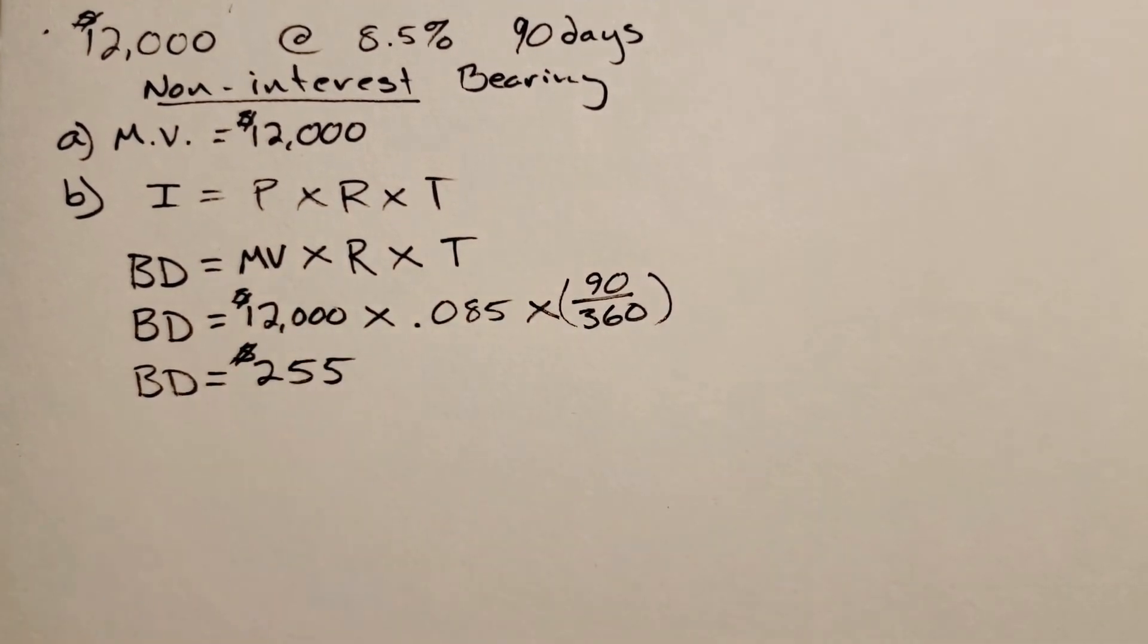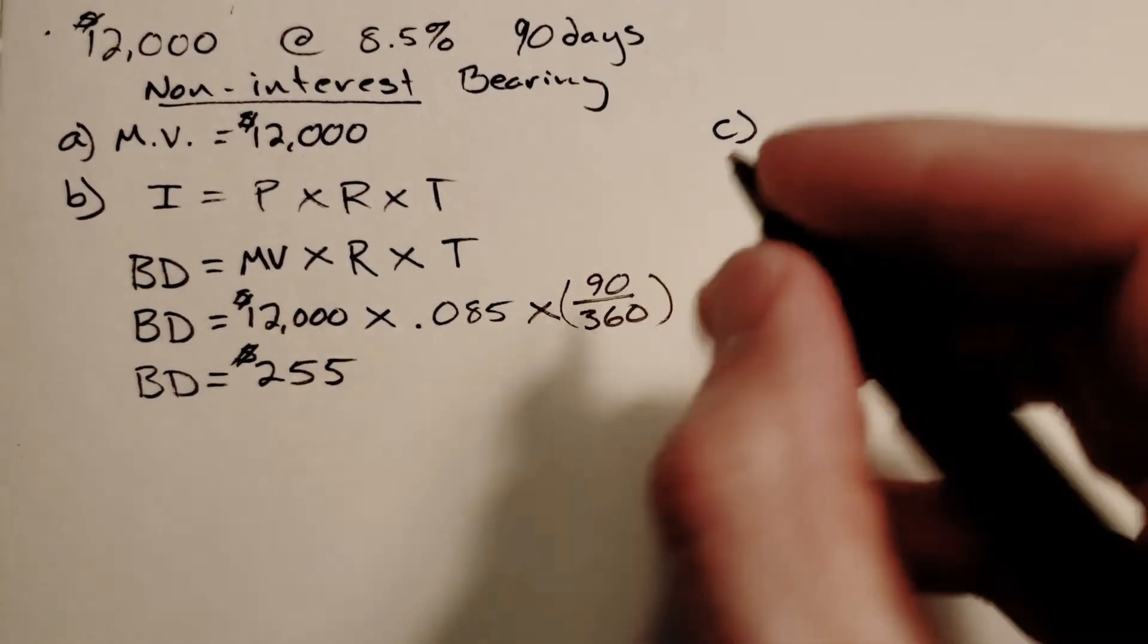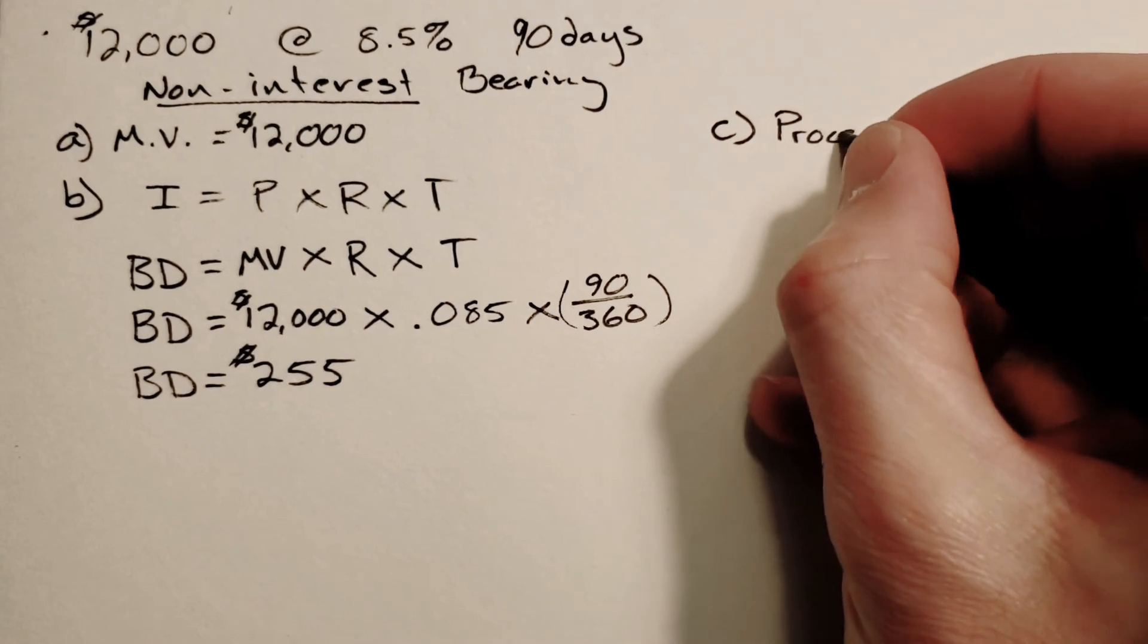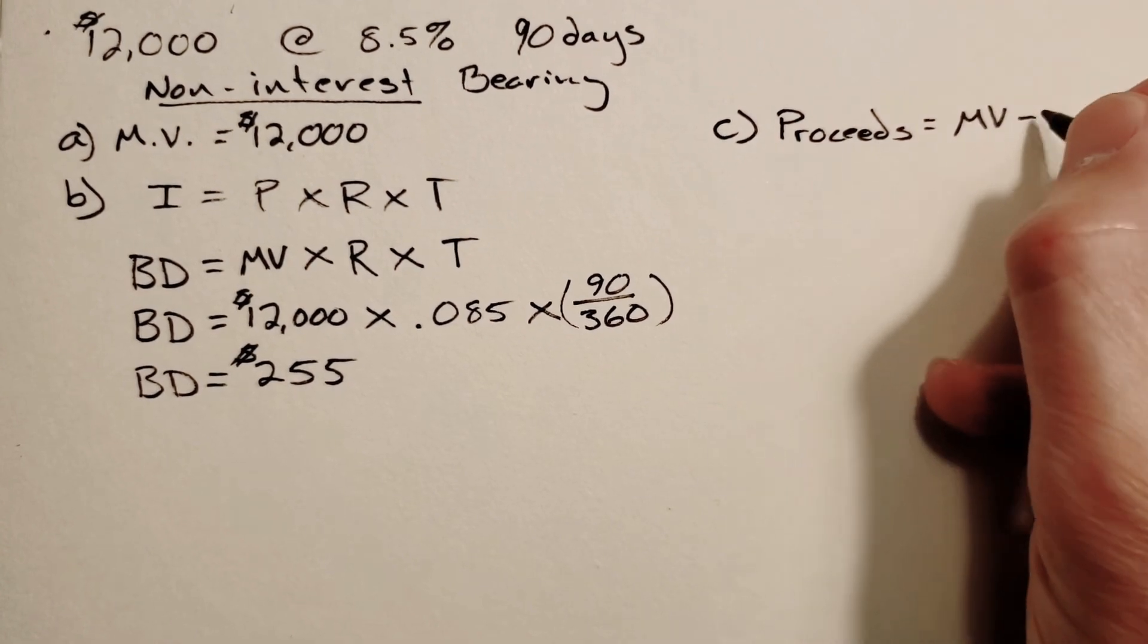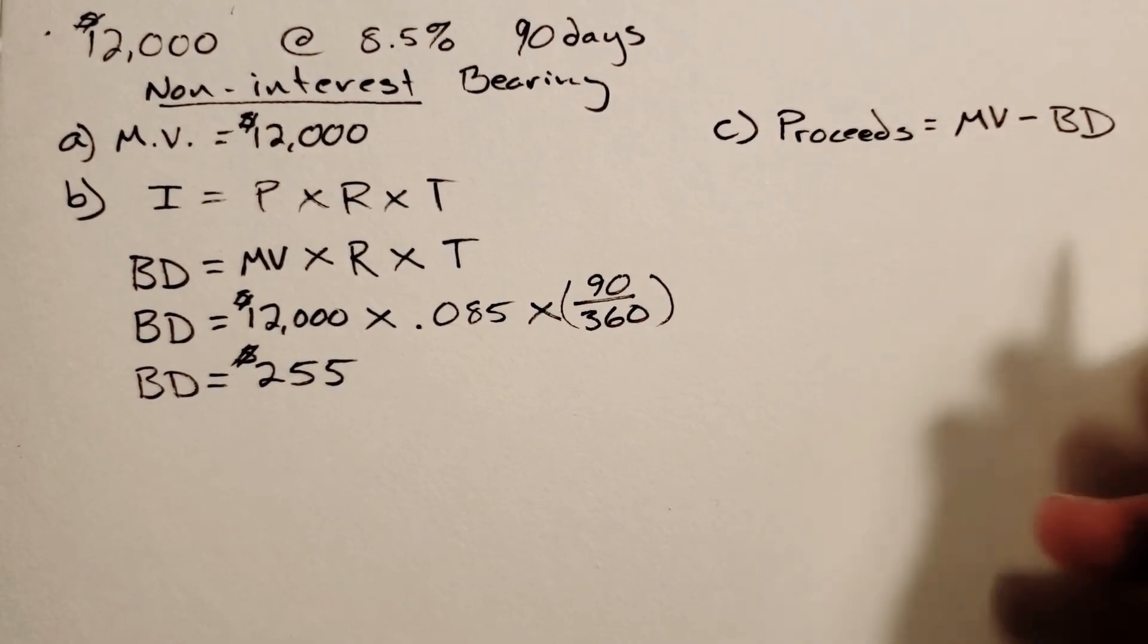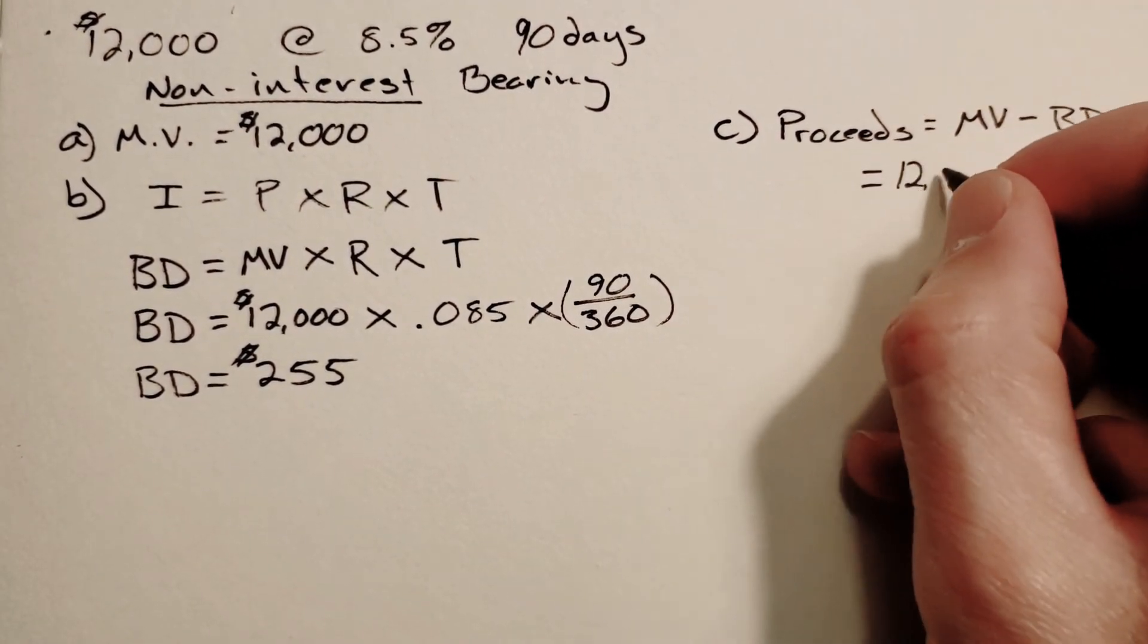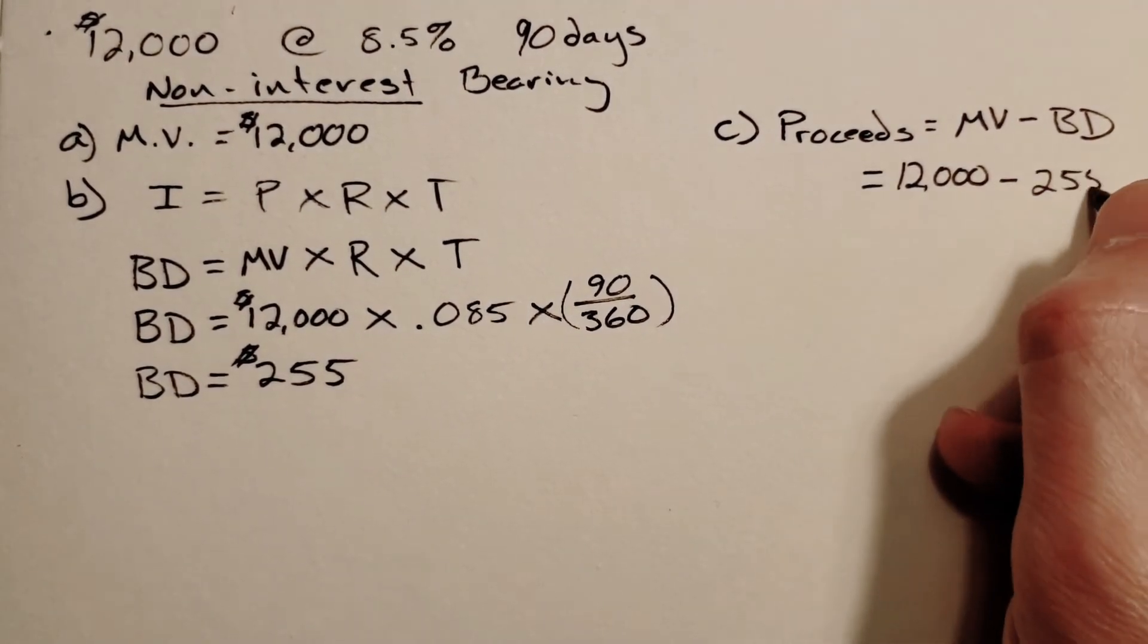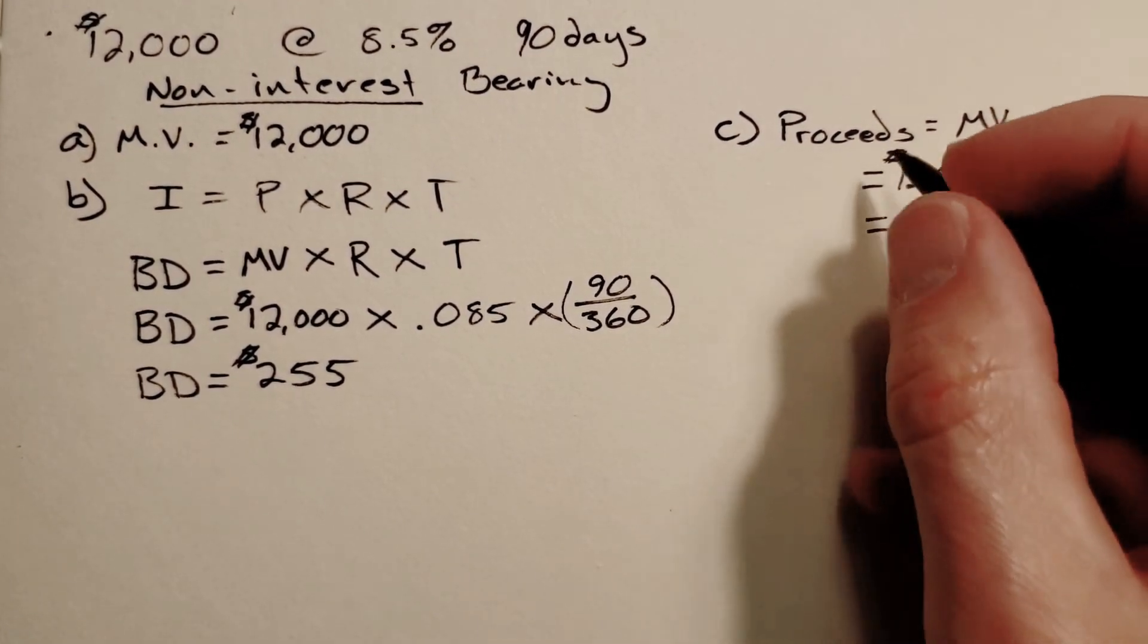Part C says what is the amount of your proceeds. Proceeds is what you take home initially, so your proceeds is your maturity value minus your bank discount.